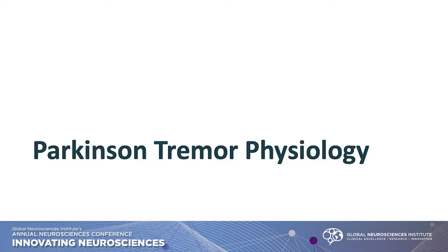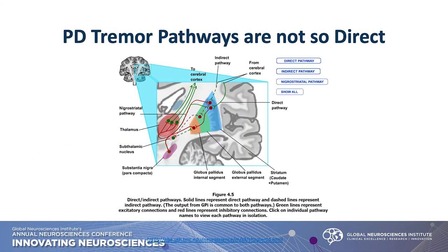Talking about Parkinson's tremor — we all know about the direct and indirect pathway, but when it comes to tremors, it's not so direct. The direct pathway drives movement; the indirect pathway inhibits movement — DDII. When we think about that inhibition of movement, it's really the bradykinesia, the slowness, and the stiffness — not so much the tremor, because the tremor pathway is far more complex. But it's important to know because it interacts in some way.